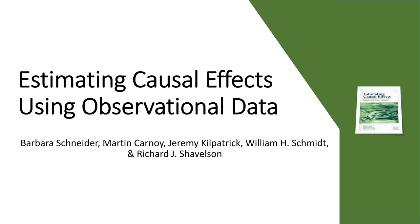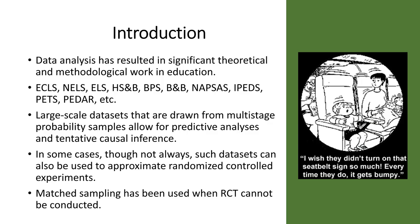We turn our attention to a specific chapter in a book called Estimating Causal Effects Using Observational Data. The chapter was written by Schneider et al. For a very long time, we've devoted our efforts as researchers to focusing in on data analysis, and in particular we're interested in data analysis to get causal effects. Unfortunately, the research designs required to estimate causal effects are typically the randomized controlled trial or the randomized controlled experiment.